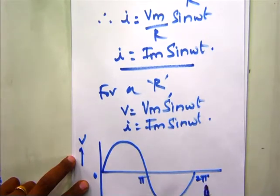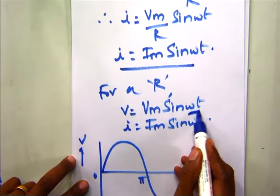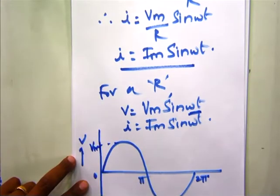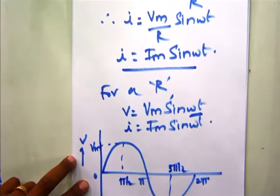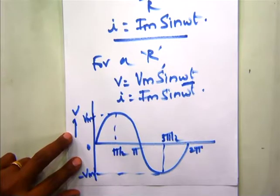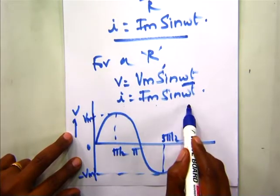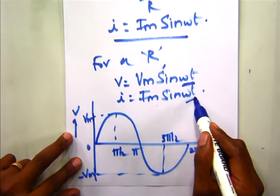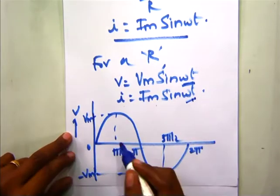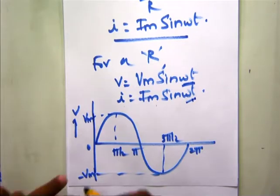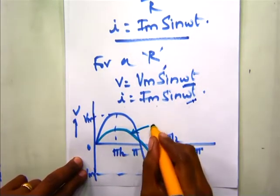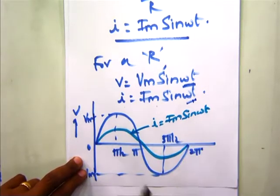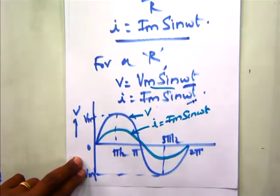At omega t equal to 3 pi by 2, we have an amplitude of minus Vm. Similarly, if we plot I equals Im sin omega t on the same curve, when omega t is 0, pi, or 2 pi, the current waveform is also 0. The current waveform for I equals Im sin omega t and the voltage waveform for V equals Vm sin omega t are both shown.